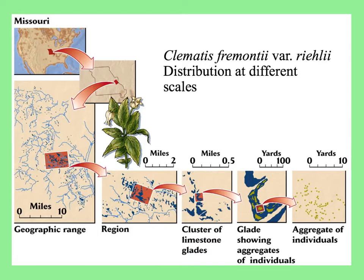Then there is the region, a part of that range, that we're going to examine more closely. We see that the species is restricted to limestone glades, places that are seasonally wet. And in a single glade, looking closely in the box at the right, each little green dot is a Clematis plant. So this is looking at the distribution at different scales.